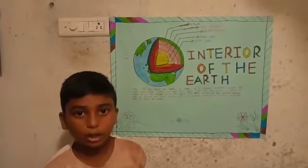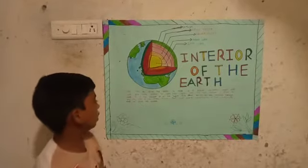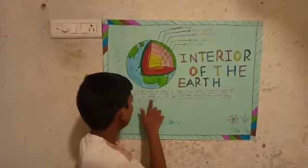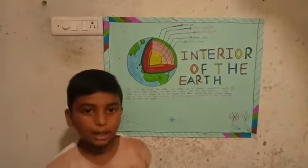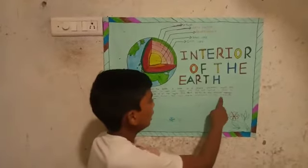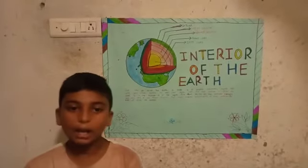It is about 35 kilometers in continental masses and only 5 kilometers thick on the ocean floor. Main minerals and constituents of the continental crust are silica and aluminium.